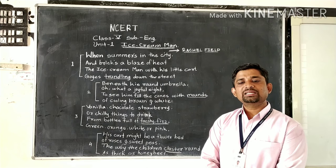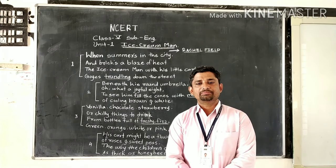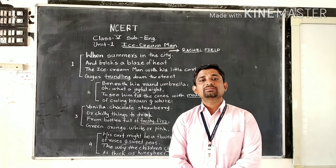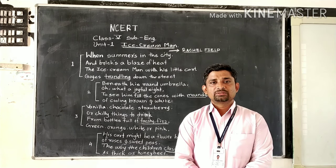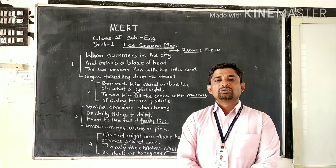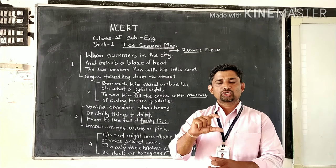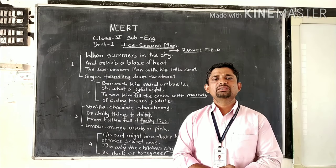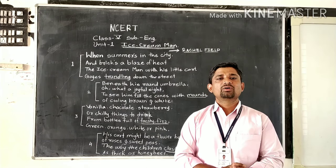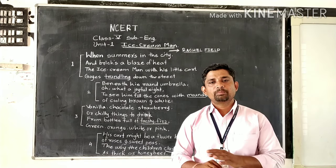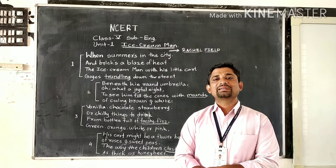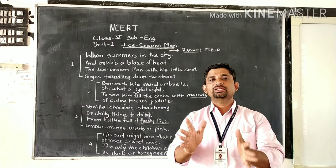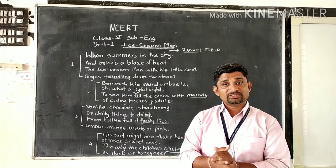Here in the second stanza, the poet explains: beneath his round umbrella, oh what a joyful sight! The joyful sight is when the ice cream man's mounds fill the cones — like short mountain shapes, hip-up triangular shapes, brown and white in colour. On his little cart, protecting from the hot rays of the sun beneath his umbrella, all the sight is very joyful.